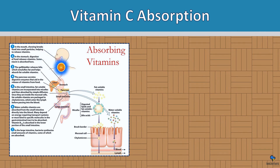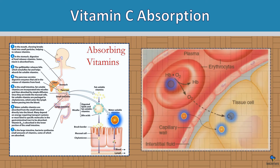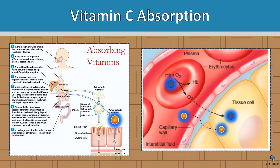Vitamin C absorption: as we eat an orange — which has high vitamin C — it goes into the stomach, then the small intestine, gets into the blood, and can transfer electrons. Vitamin C travels in the blood plasma, not in the blood cell like an air ion would, but they both reach the same tissue cells.